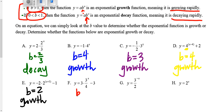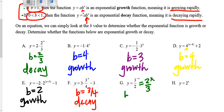On f, the b value is three-fourths, so this would be decay — that's a number in between zero and one. I'm going to try to trick you here on g. If you remember when we talked about negative exponents in our previous unit, that means you take the reciprocal. So g can be rewritten as two-thirds to the x, which means the b value is two-thirds — this is decay. If you had forgotten to flip that and looked at three over two, three over two is actually growth, which would change your answer completely. On h, the b value is two, so that would be growth.